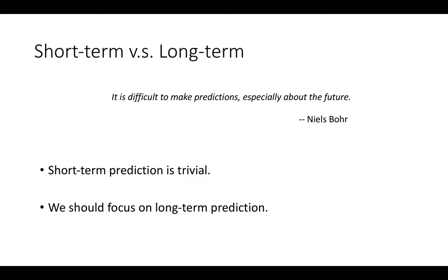Previous methods tried to get around this problem by studying short-term prediction using model predictive control for planning. In model predictive control, you take action every step and do planning by taking multiple actions at each time. However, we have seen efforts showing that doing long-term prediction can actually help learning better planning.